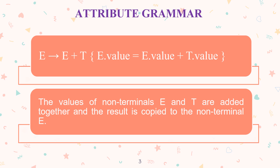This grammar equation gives an example of attribute grammar: E implies E plus T, that is E dot value which is equivalent to E dot value plus T dot value. The values of non-terminals E and T are added together and the result is copied to the non-terminal E.